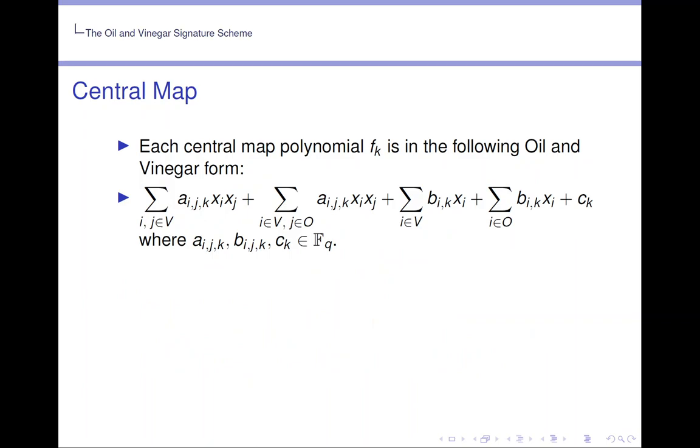Each central map polynomial F_k is in the following oil and vinegar form. Here we see that we have vinegar times vinegar, vinegar times oil, vinegar by itself, oil by itself, plus a constant. Notice that there are no oil times oil terms.